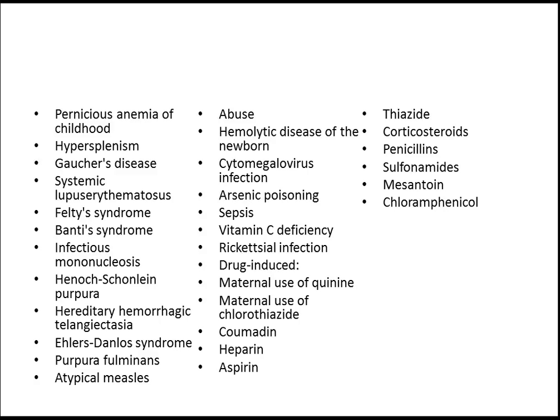Regarding drugs, the important one you need to remember causing purpura in children is steroids — these are very important. The rest you can memorize for your examination if you want, otherwise it is okay. Also remember arsenic poisoning — it is not very common nowadays, but it is one of the causes for purpura in children.